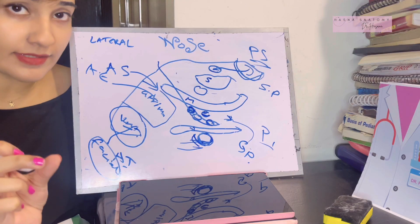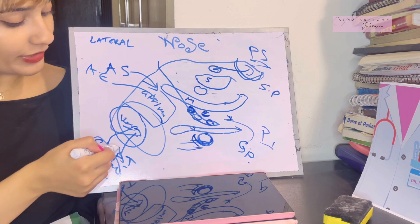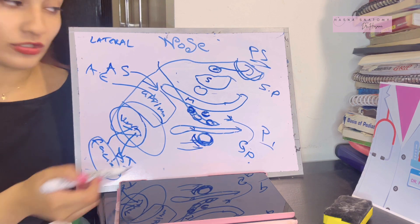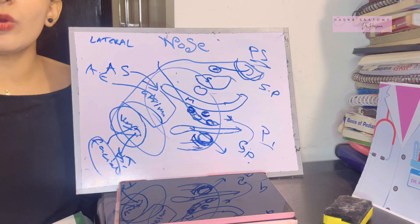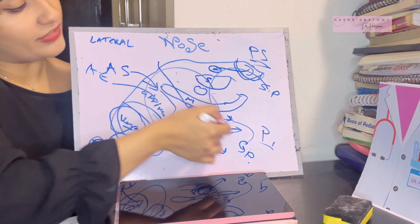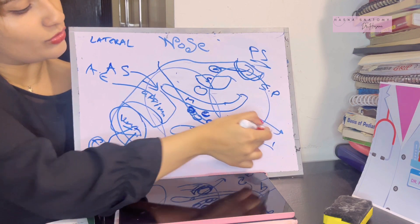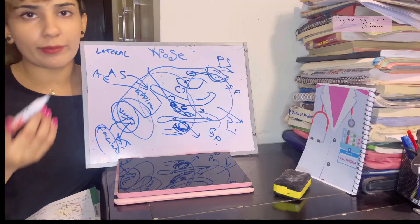The venous supply: the anterior part drains into the facial vein, the middle part drains into the pterygoid venous plexus, and the posterior part drains into the pharyngeal plexus of veins.